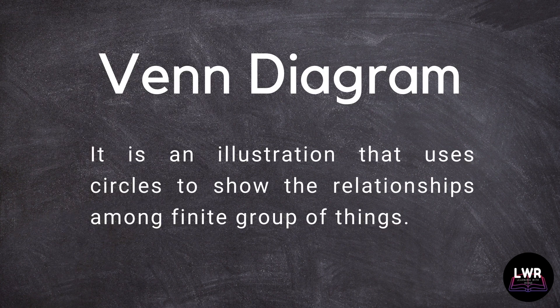A Venn diagram is an illustration that uses circles to show the relationships among a finite group of things. To understand the Venn diagram better, we will have the following examples.